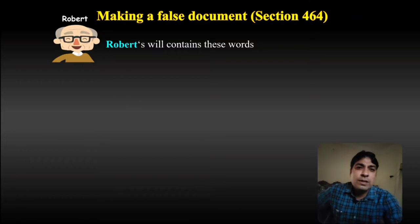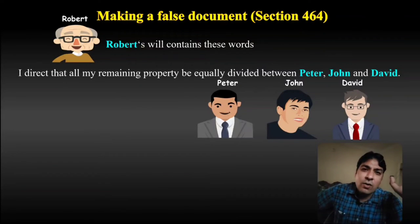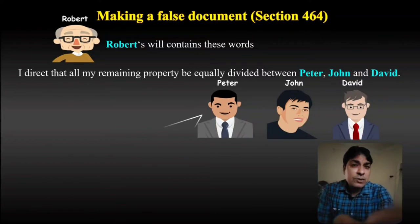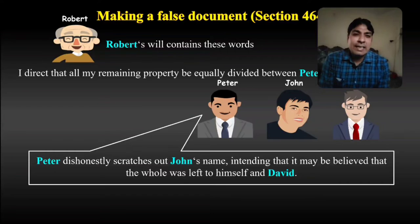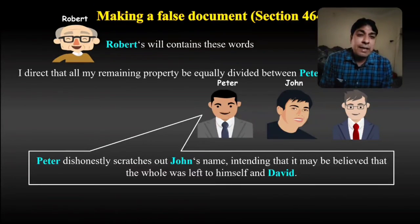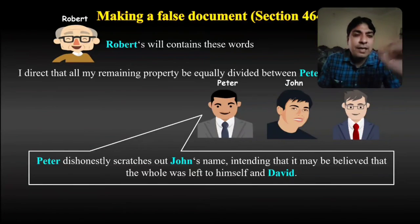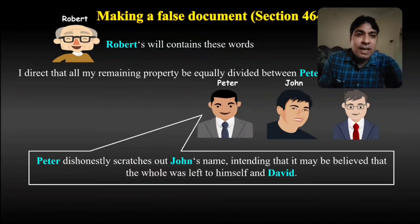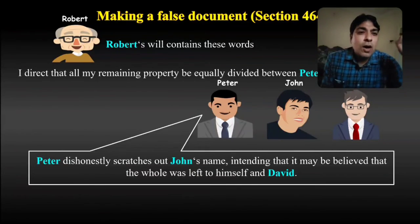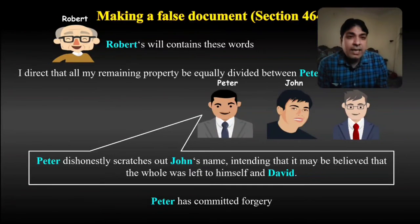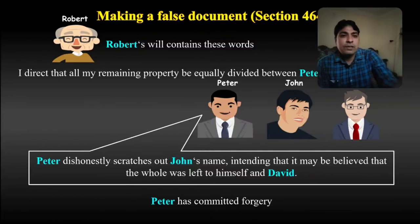Robert's will contains these words: 'I direct that all my remaining property be equally divided between Peter, John and David.' So Robert made a will directing his property be equally divided among Peter, John, and David. But Peter dishonestly scratches out John's name, intending that it may be believed that the whole was left to himself and David. Peter intentionally deleted John's name, wanting to show that Robert's property should go only to Peter and David. Peter has committed forgery.